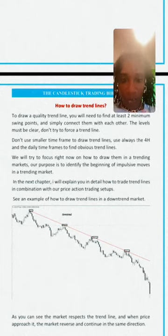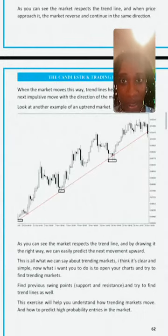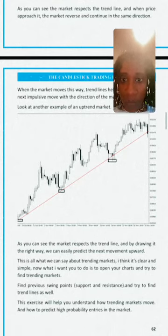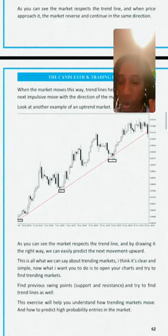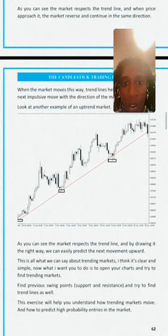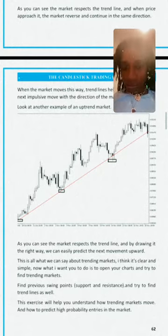When the market moves in a direction, nine times out of ten when the market came down to the trend line, the trend continued in an impulsive move before retracing. Or once it retraced and hit the trend line, it then made the impulsive move.